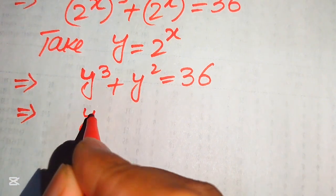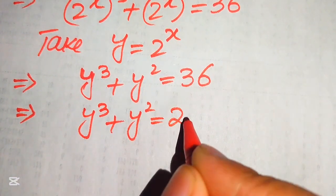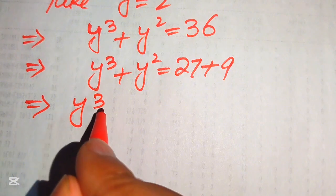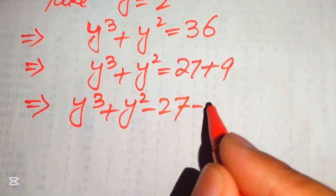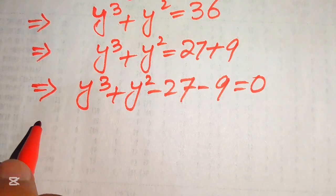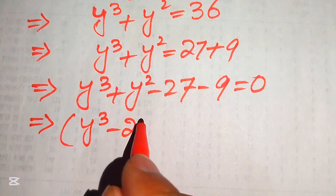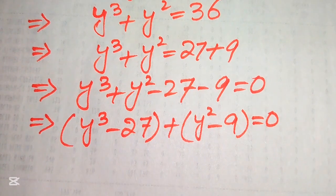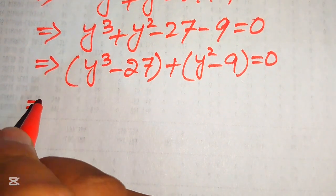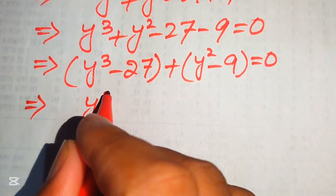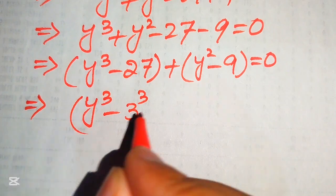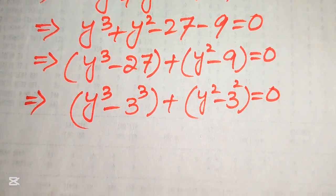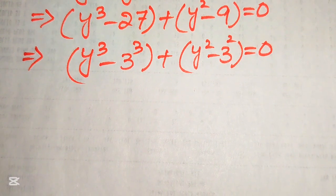We break the right-hand side by writing 36 as 27 plus 9, then move both values to the left-hand side to get y³ plus y² minus 27 minus 9 equals 0. We pair the cubic term with 27 and the y² term with 9, then rewrite 27 as 3 cubed and 9 as 3 squared.